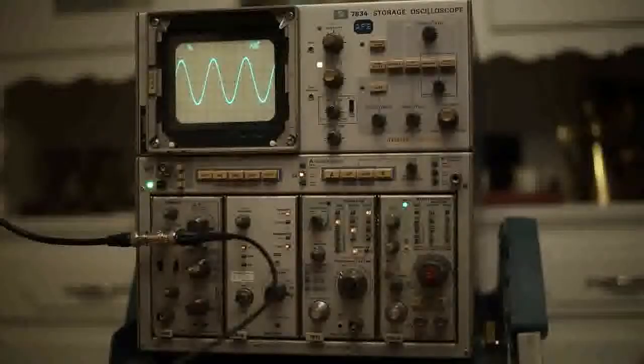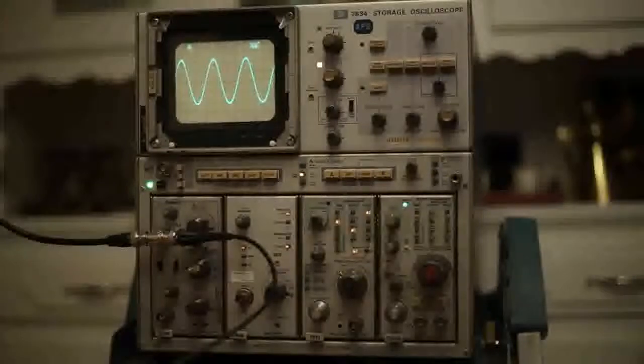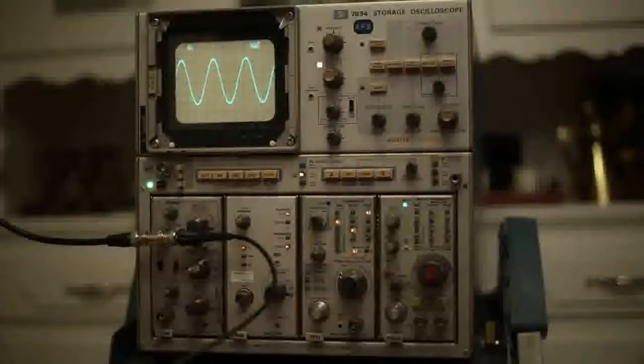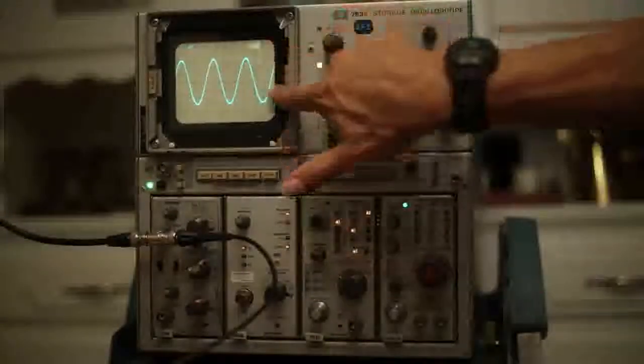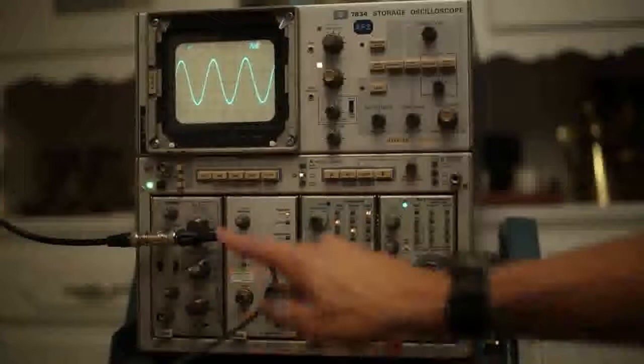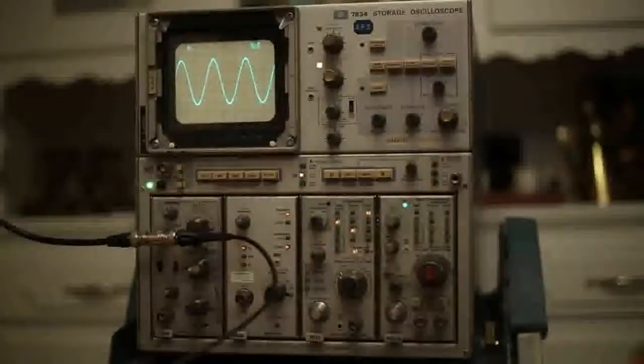First I'll go over the diagnostic equipment I have here at the house. In front of you is a Tektronix 7834 storage oscilloscope. We'll use the oscilloscope to look at our analog signals. Along the y-axis we can read voltage, along the x-axis we can read time.